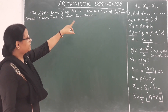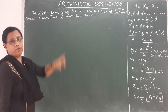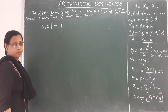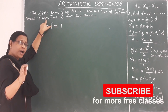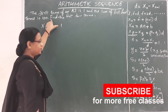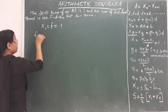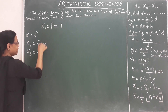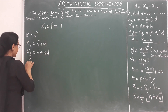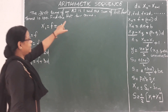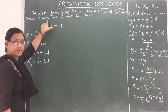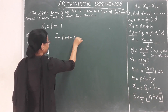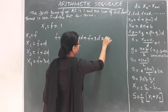Next question: The first term of an AP is 1 and the sum of the first 4 terms is 100. Find the first 4 terms. The terms are f, f plus d, f plus 2d, and f plus 3d. Their sum equals f plus f plus d plus f plus 2d plus f plus 3d, which equals 100.